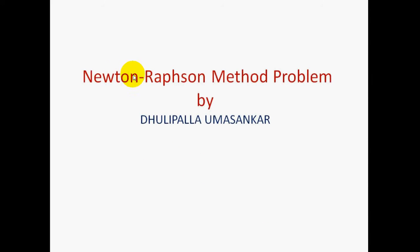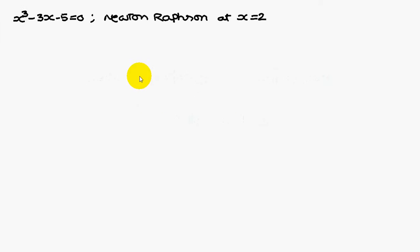Today we are going to discuss a Newton-Raphson method problem. We have x³ - 3x - 5 = 0. We have to solve this equation using Newton-Raphson method at the point x₀ = 2.